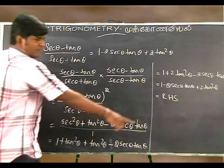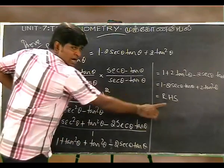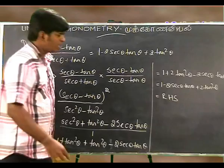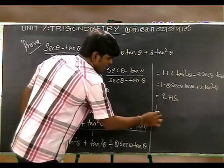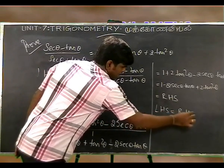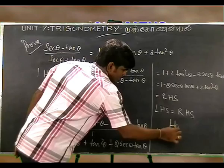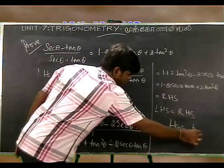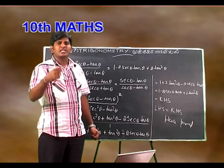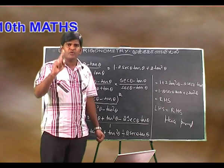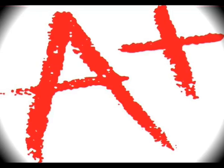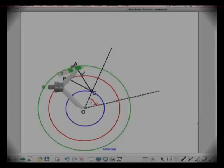Hence proved. LHS is equal to RHS. Hence proved. In this way, you have to solve 10 such problems. You can solve all 10 problems using this method.